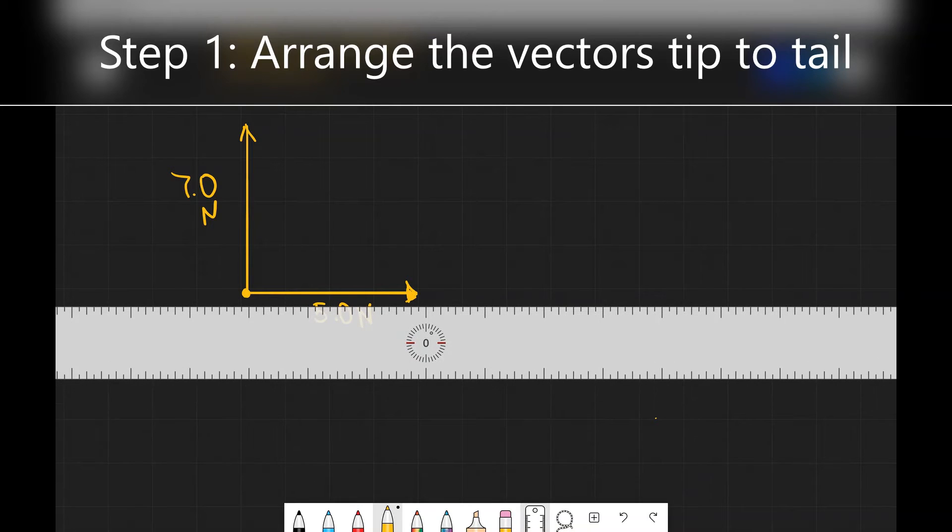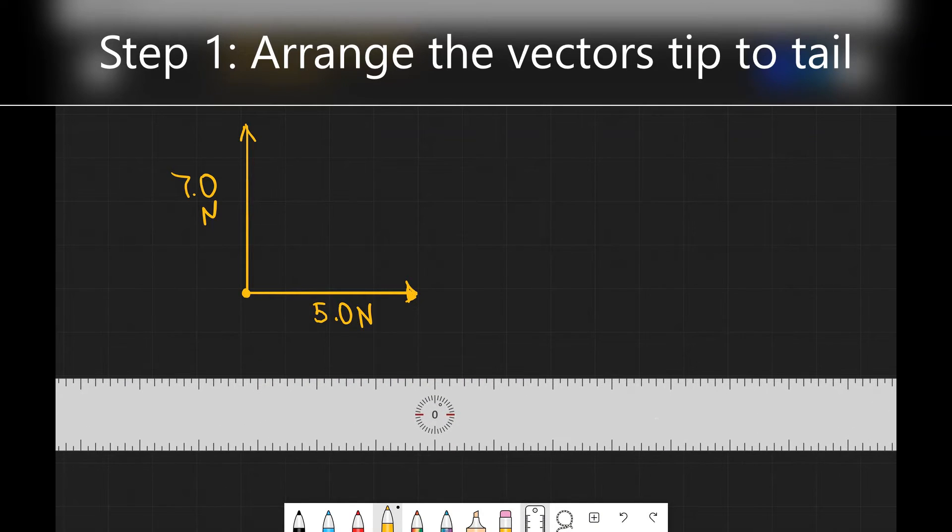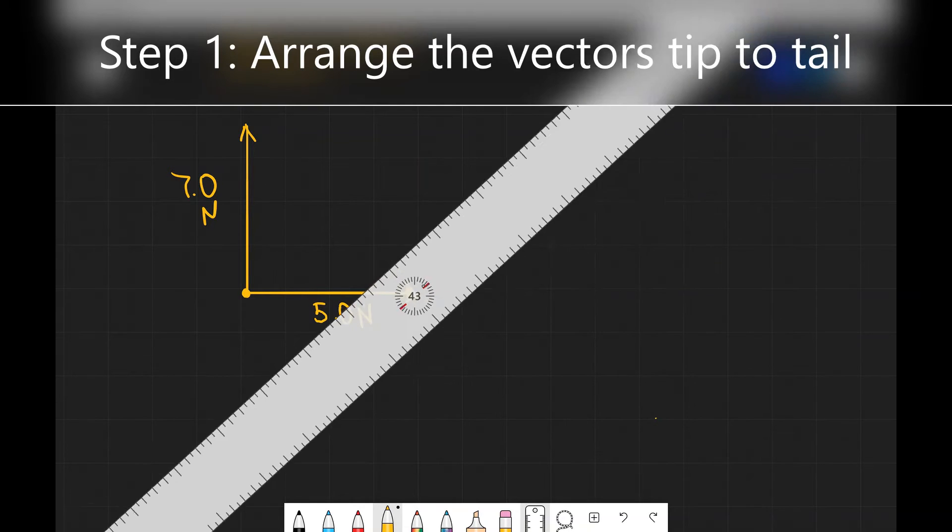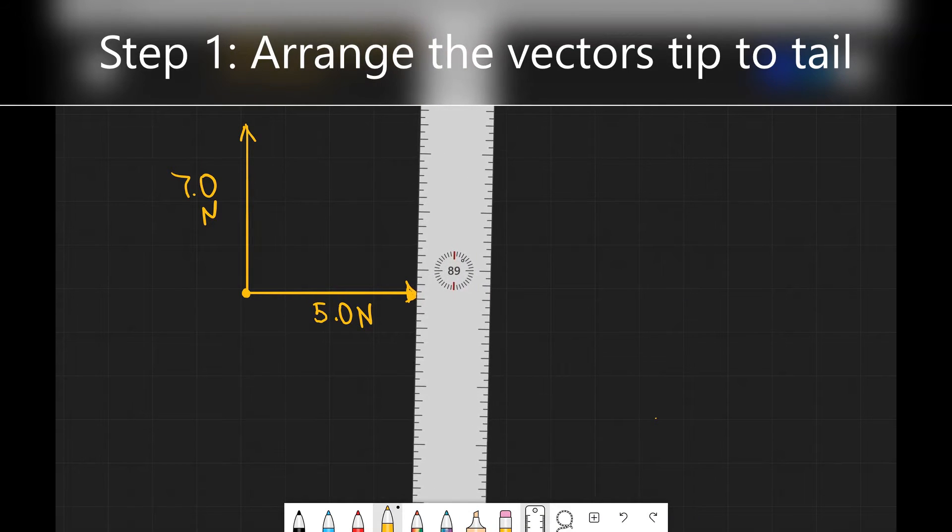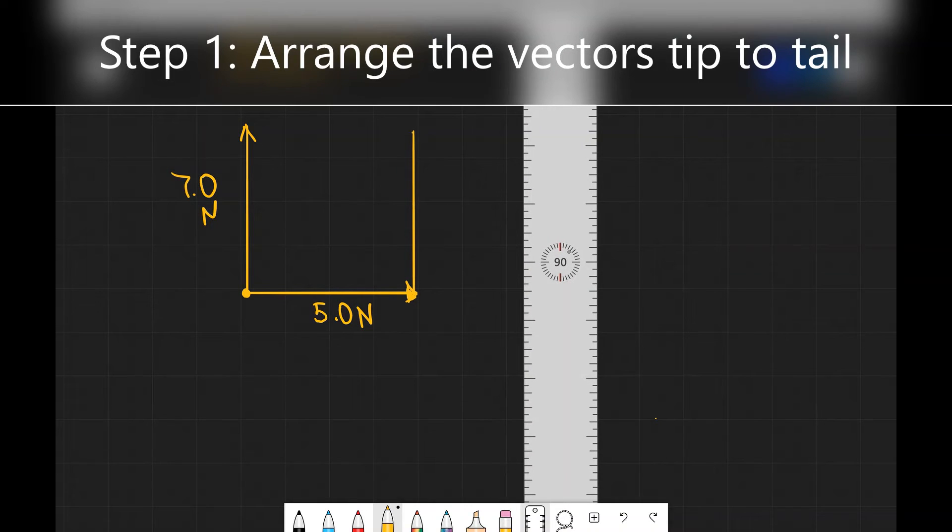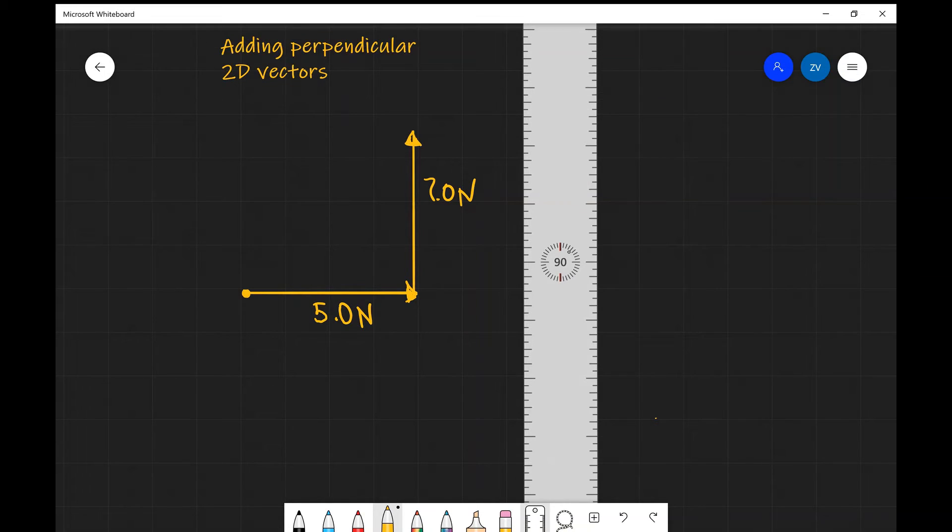So what I'll need to do is I'll need to move the 7 newton vector, this one over here, the 7 newton vector, I'm just going to move that to the right. So in this case now they're going to be arranged tip to tail. Perfect, so we can see that this vector is now like so. Just to avoid any confusion I'm just going to remove this vector from this side. So now I have a 7 newton vector and a 5 newton vector all arranged tip to tail.